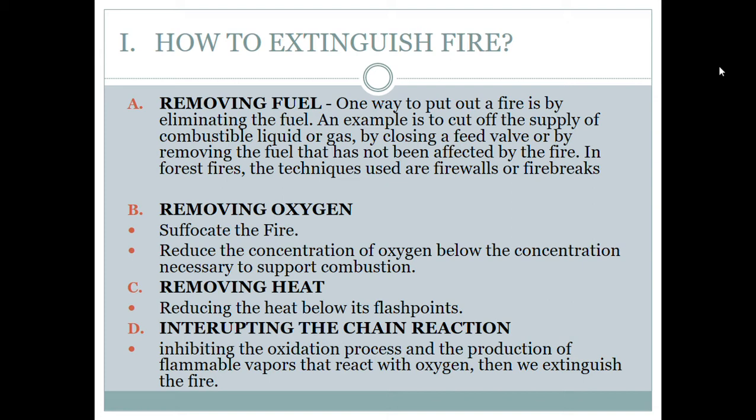Next is removing heat — we simply reduce the heat below its flash point. Interrupting the chain reaction also works by inhibiting the oxidation process and the production of flammable vapors that react with oxygen, and then we extinguish the fire.